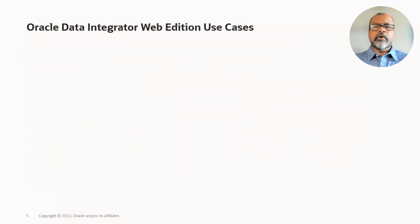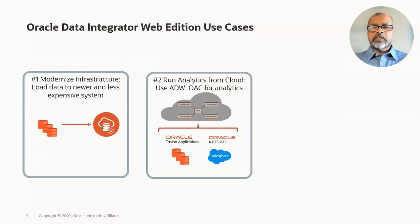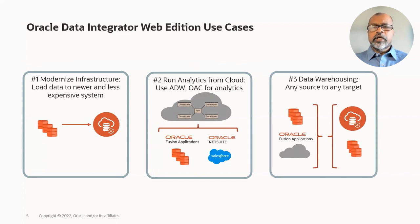Let's look at various use cases for ODI Web Edition. The first use case is modernizing infrastructure — customers may move data from legacy sources to a modern database such as Oracle Autonomous Database, and ODI Web Edition can help with this heterogeneous data migration. The second use case is improved analytics — moving data from legacy sources to a database where it can be analyzed using applications like Oracle Analytics Cloud. The third use case is data warehousing, which is today's topic. With heterogeneous connectivity and transformation capability in ODI Web Edition, it is very well suited for this use case, as we will see in the demo.